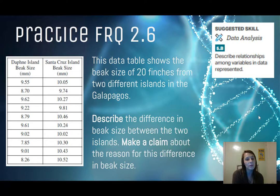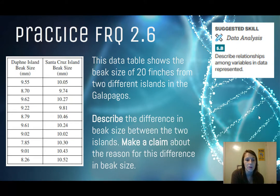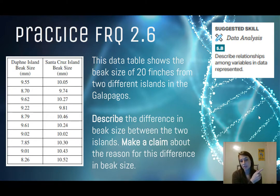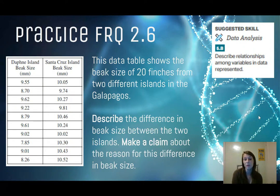For your practice FRQ for section 2.6, you'll practice the skill of describing relationships among variables in data. The data table shows the beak size of 20 finches from two different islands on the Galápagos — Daphne Island and Santa Cruz Island — in millimeters. Look through the data and describe the difference in beak size between the two islands. Then make a claim about the reason for this difference, connecting evidence from the data chart and the scientific concepts you just learned about to explain the reasoning behind the difference in beak size.